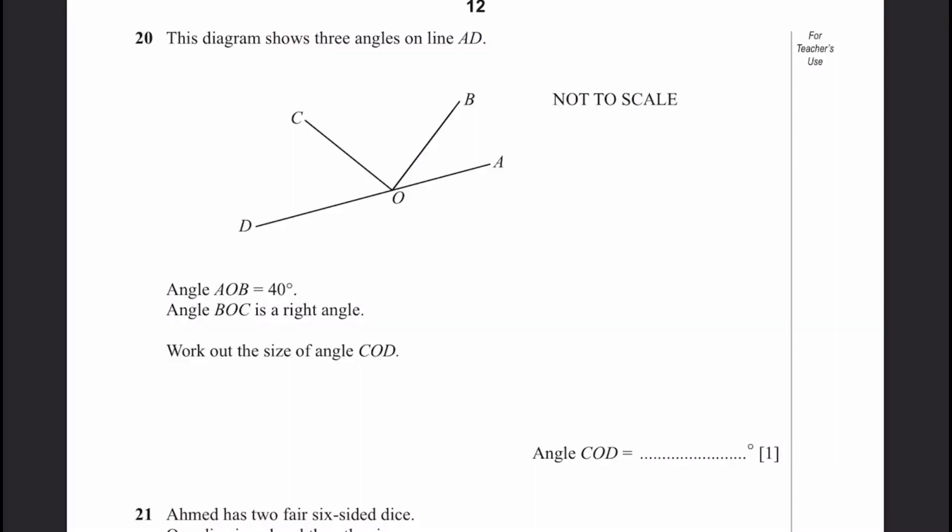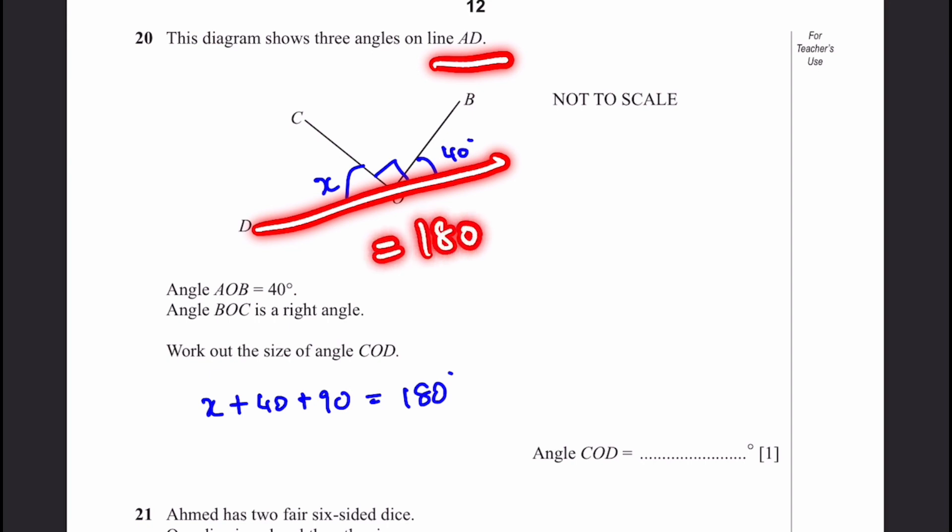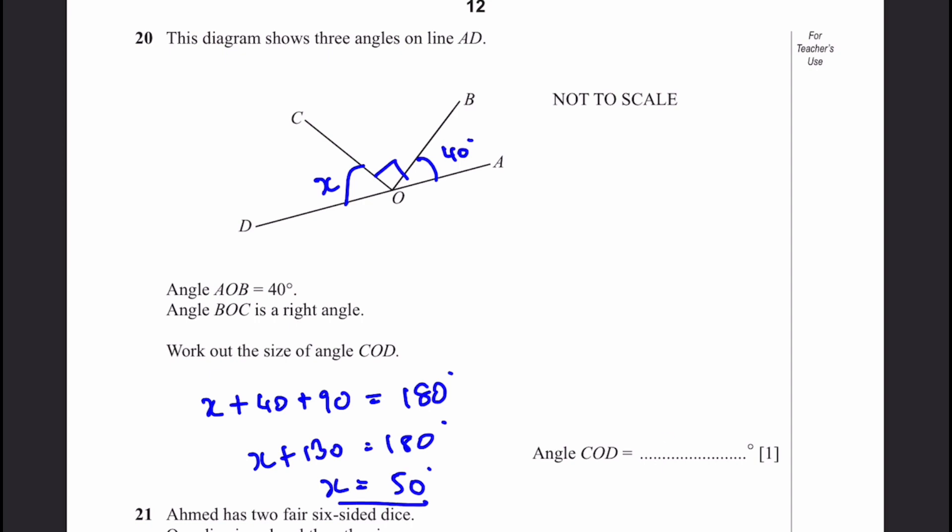Question 20. The diagram shows three angles on line AD. Angle AOB equals 40 degrees. Angle BOC is the right angle. Work out the size of angle COD. Angle AOB is 40 degrees, angle BOC is 90 degrees. Let's name angle COD as X. X plus 40 plus 90 equals 180, because the angles on a straight line are always equal to 180 degrees. X plus 130 equals 180, and X equals 180 minus 130, which is 50 degrees. That's the answer.